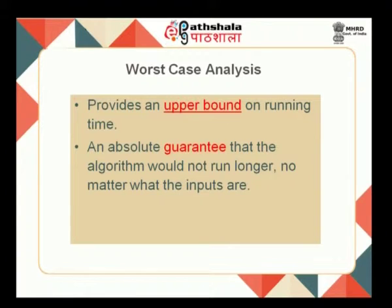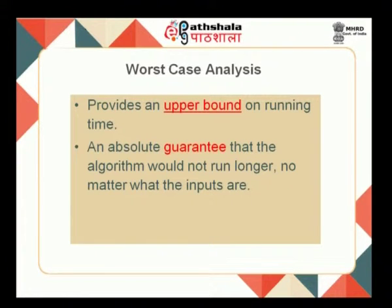These give some idea about various bounds. The worst case analysis gives the upper bound on the running time, meaning the algorithm would not run longer no matter whatever the inputs are. For example, if somebody asked me the airfare of a flight from Chennai to Delhi, I may not know the exact airfare, but I can say it will not go beyond some amount x — in other words x is the upper bound. This sort of upper bound is what is given by the worst case analysis.